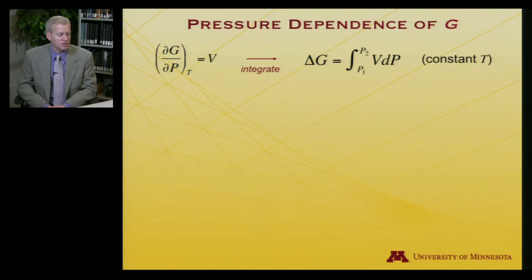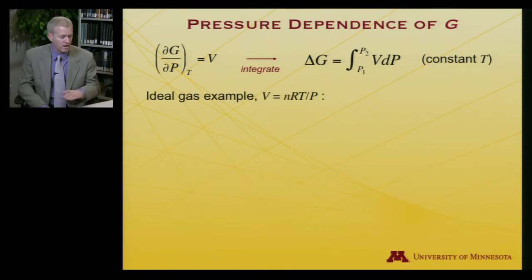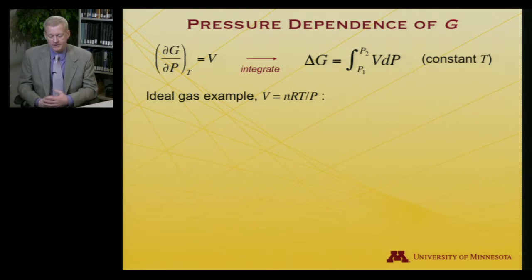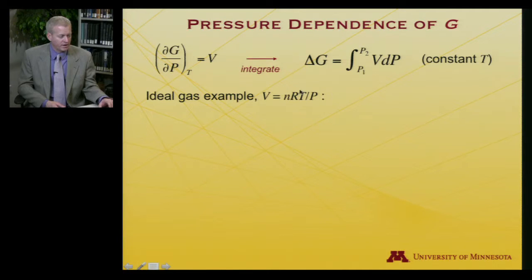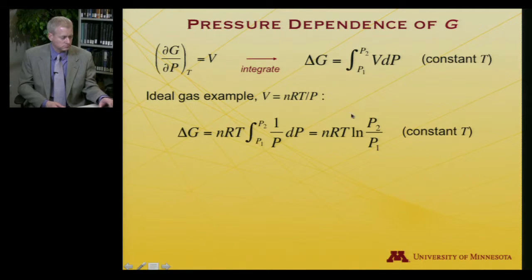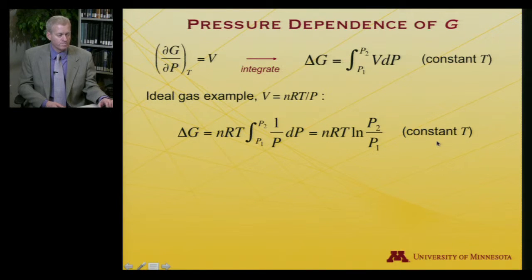Now let's look at the pressure dependence of the Gibbs free energy itself. I know that ∂G/∂P equals volume, so I can integrate delta G from an initial to a final pressure as the integral of V dP. As always, it is good to do the ideal gas first. For an ideal gas, V equals nRT over P, and since this is isothermal, T is a constant. Pulling out the constants, I get the integral from P1 to P2 of dP over P, which gives me the logarithm at constant temperature.